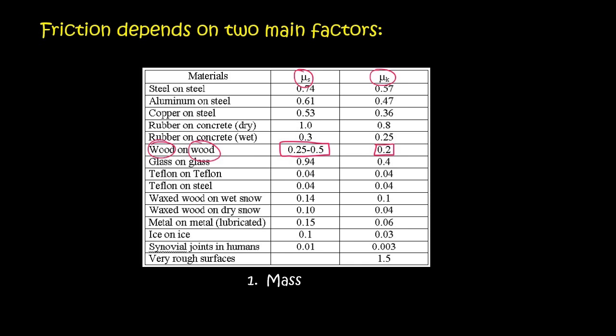For example, if you have a piece of ice and you slide it across a piece of ice, then it's 0.1 or 0.03. And then you've got rubber on concrete, and rubber on concrete when the concrete is wet. And so you see, notice that there's always two things. For each of them it says metal on metal, waxed wood on dry snow, Teflon on. The reason for that is that you need to know about both surfaces.